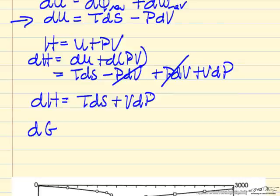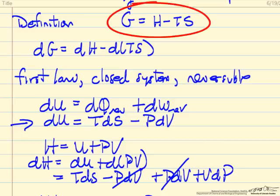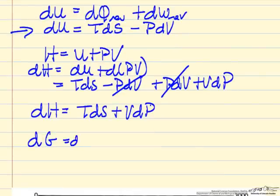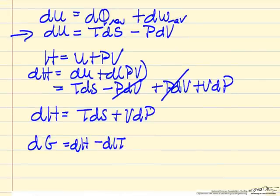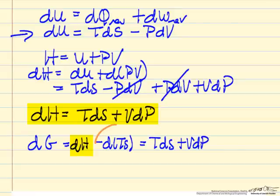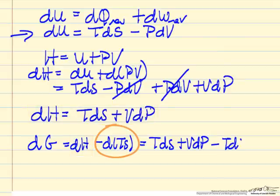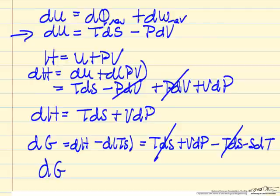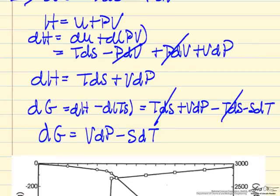With our definition of Gibbs free energy, this is dH minus dTs. So that becomes, by substituting in for dH and multiplying this out, TdS minus SdT. These terms cancel, so we end up with the equation that we will use to calculate Gibbs free energy changes: dG equals negative SdT plus VdP.